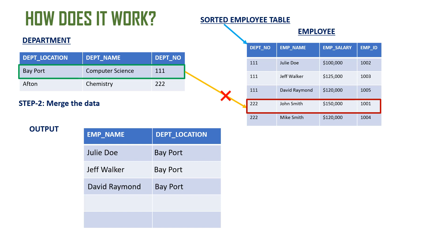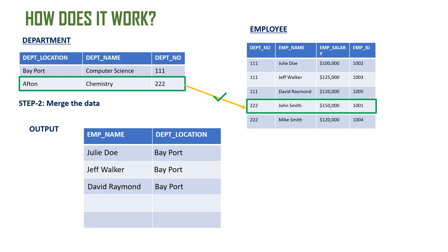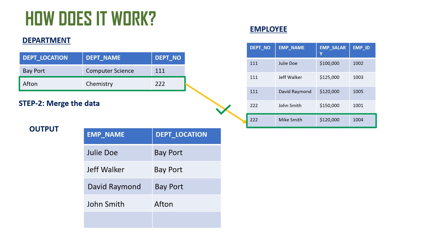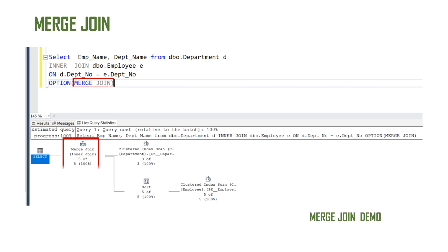When a row does not match, SQL Server increments the pointer on the department table to the next row. Importantly, it does not go back to the first row — it resumes from where it last failed. So when 222 matches 222, it adds John Smith. The next row matches Mike Smith's department ID and that data is added to the output. This is how the merge join works.